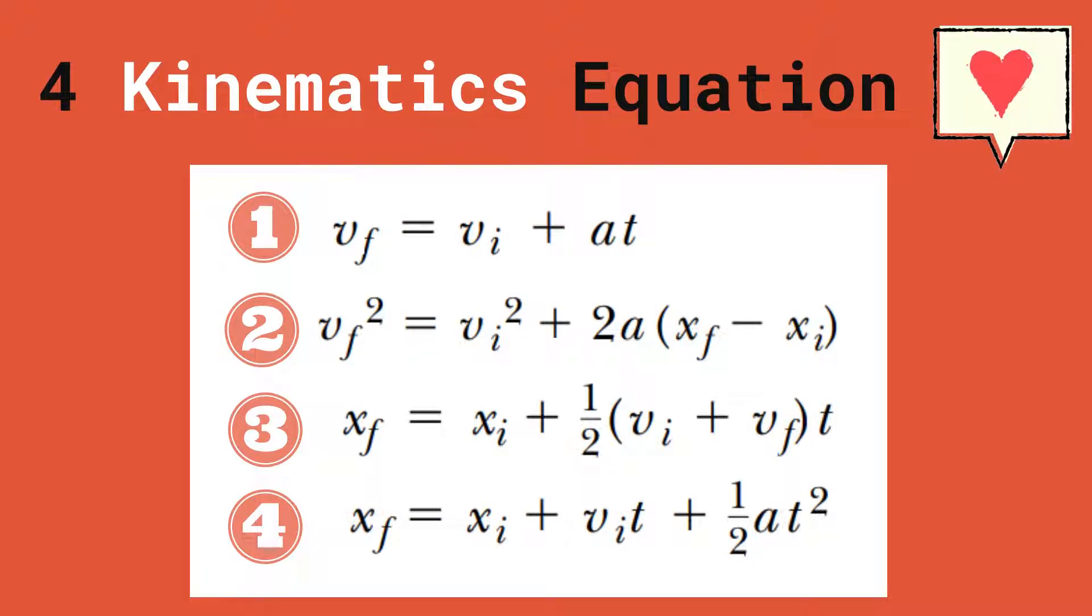The following symbols are used to represent the physical quantities: v sub i for initial velocity, v sub f for final velocity. Some textbooks use v sub 0 or v sub 1 to represent initial velocity. a stands for acceleration and t represents time. x sub i for initial position. Other books use letter d to represent distance instead of x.